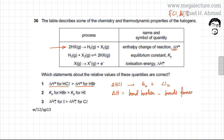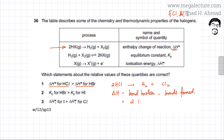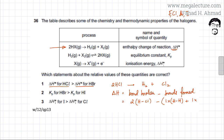I'm going to figure out how many bonds are broken and how many bonds are formed. Breaking bonds is endothermic, so this part is positive, and forming bonds is exothermic, so the bond formation energy has a negative sign. For the HCl reaction — 2HCl → H2 + Cl2 — two HCl bonds are broken, one H–H bond is formed, and one Cl–Cl bond is formed.